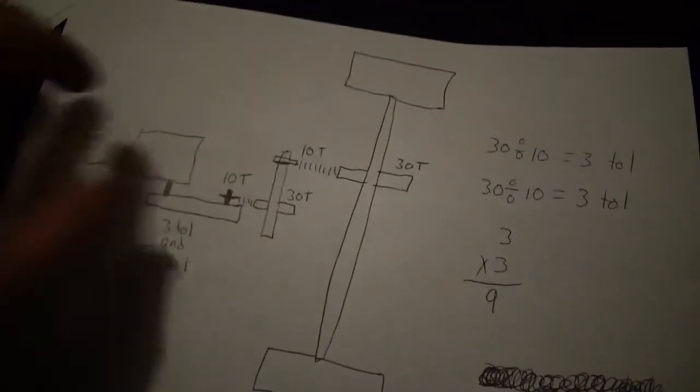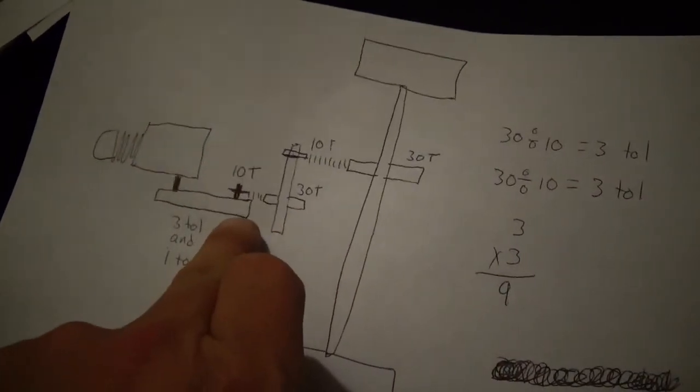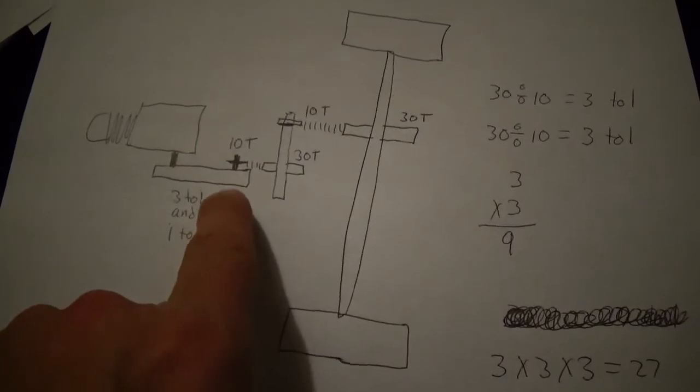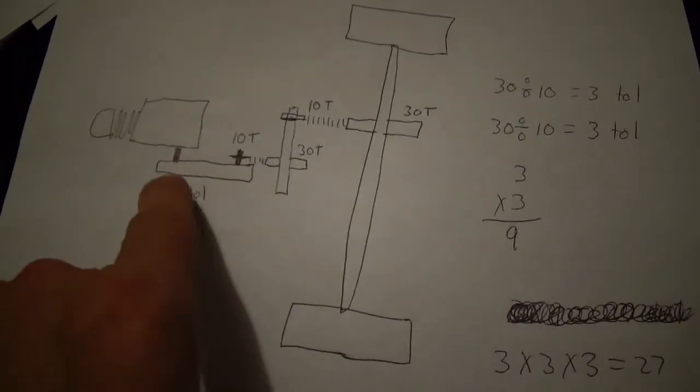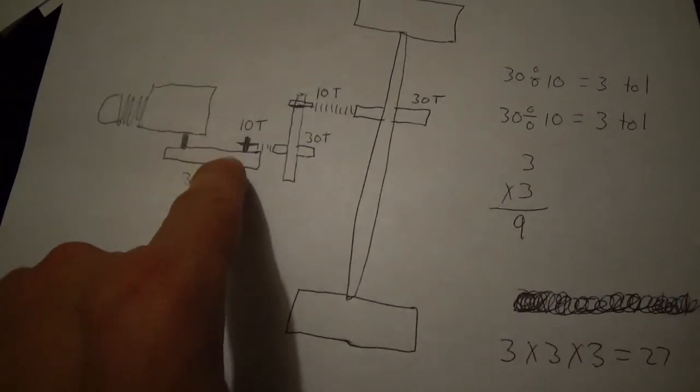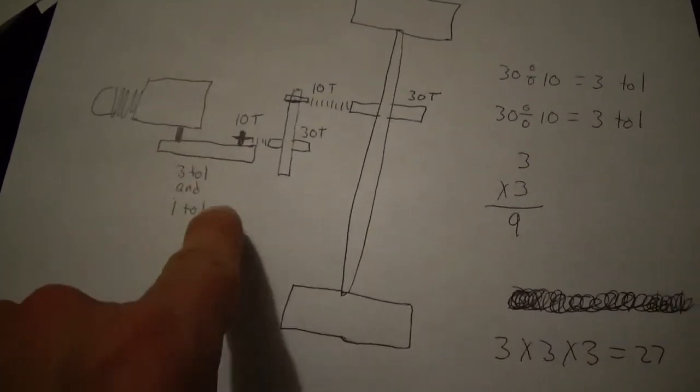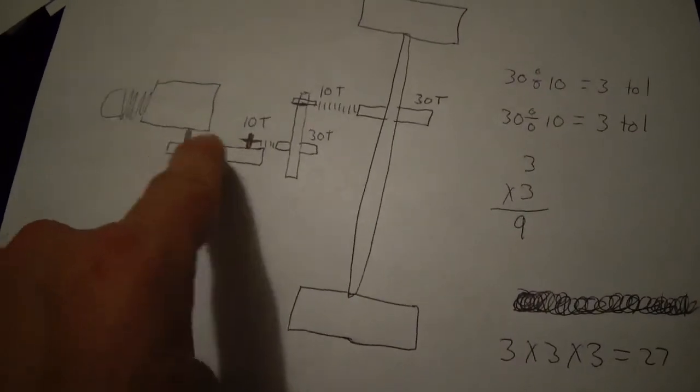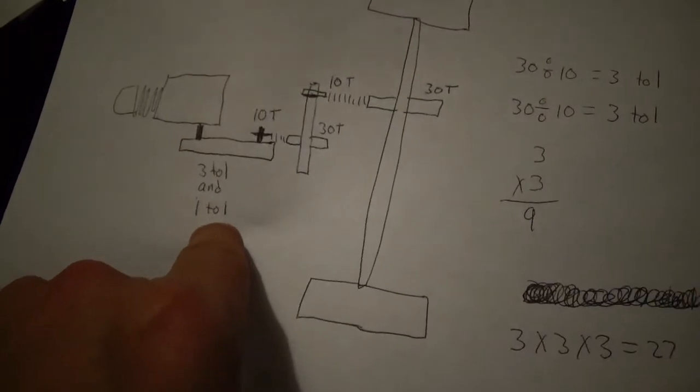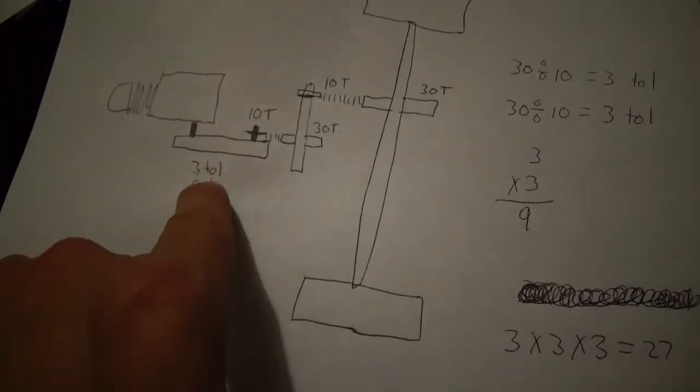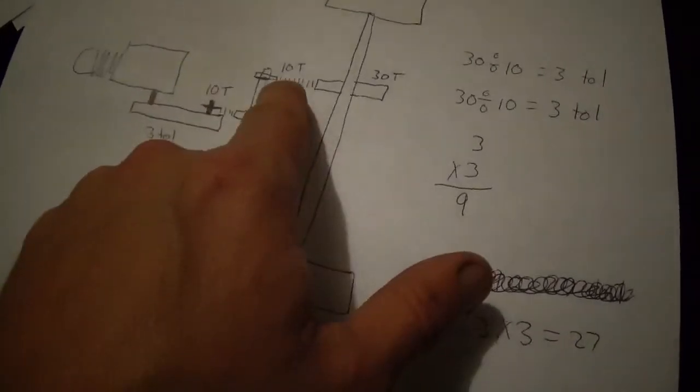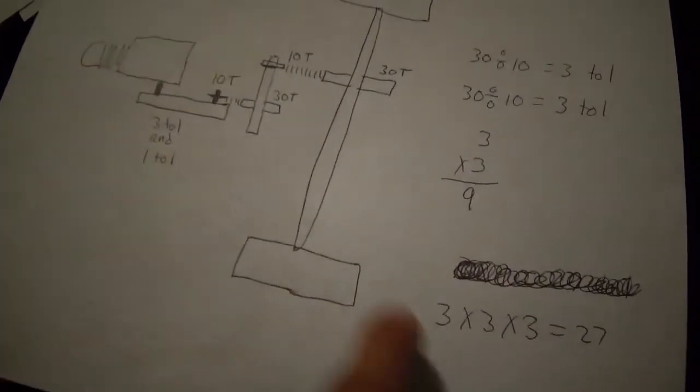On this schematic here, it's just like the previous one but instead we're going to add a torque converter in. What the torque converter does is it's another ratio of three-to-one. Best information I found on these is that they start off at three-to-one, and then after they expand and this one gets smaller, you end up with a one-to-one ratio. But starting out is three-to-one.